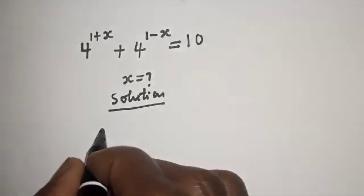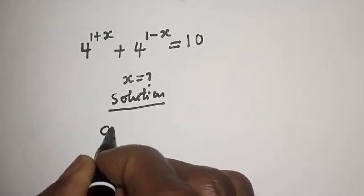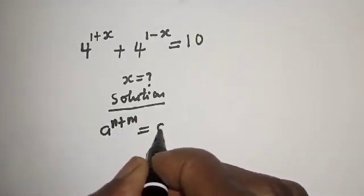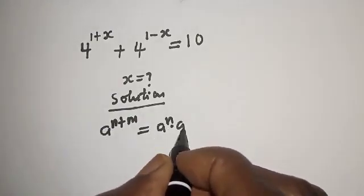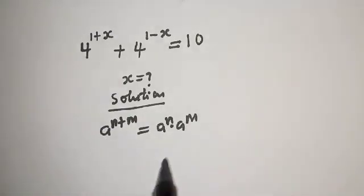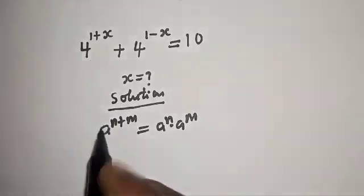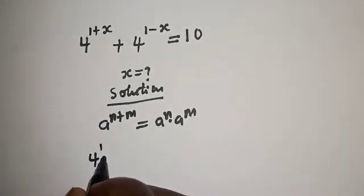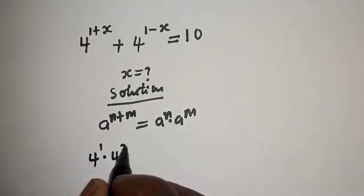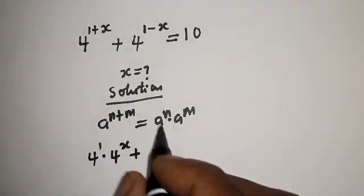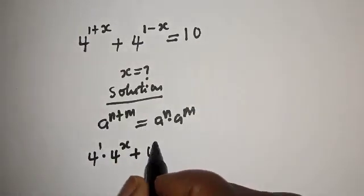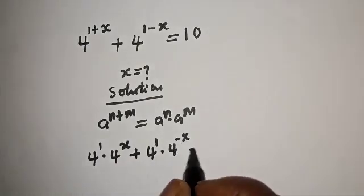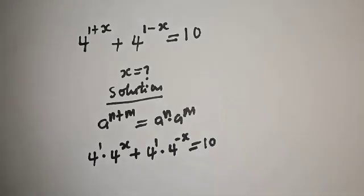Take note of this exponential rule: if you have a raised to power n plus m, this is equal to a raised to power n multiplied by a raised to power m. Then this can be written as 4 raised to power 1 multiplied by 4 raised to power x, plus 4 raised to power 1 multiplied by 4 raised to power minus x, is equal to 10.